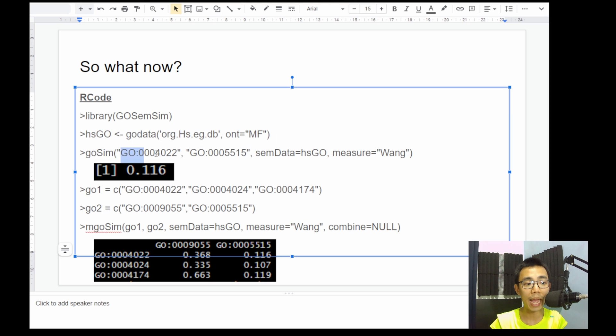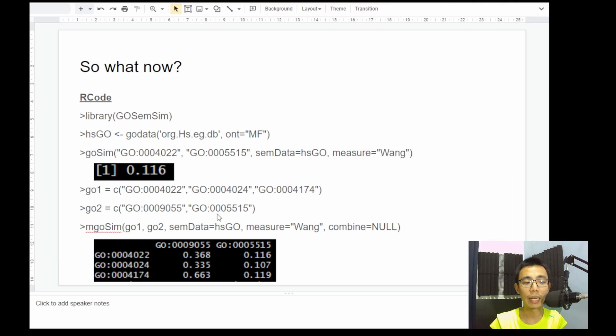So you can know that GO:0004022 and GO:0005515 has a 0.116 similarity between them. And if you have a gene, for example, ADH4 and LDB3 that we said just now, you can actually make a list of GO1 and GO2, and then make the comparison between the two. And you can actually get a whole list of the similarity matrix between the two GO terms.